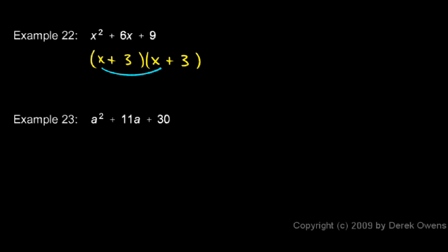Doing a FOIL gives us x squared plus 3x plus 3x, that's our 6x, plus 3 times 3, which is 9, so that works.